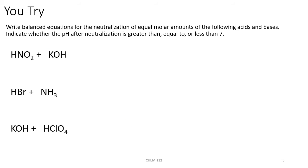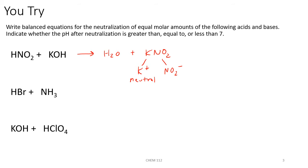Next, we have HNO₂ plus KOH — nitrous acid plus potassium hydroxide. Doing double replacement, we get water and our salt is potassium nitrite, KNO₂. To decide if it's acidic, basic, or neutral, we break the salt into its cation and anion: potassium ion and the nitrite anion. Potassium ion is neutral, and NO₂⁻ would be basic. So after neutralization, the pH would be greater than 7 — a basic salt was formed.